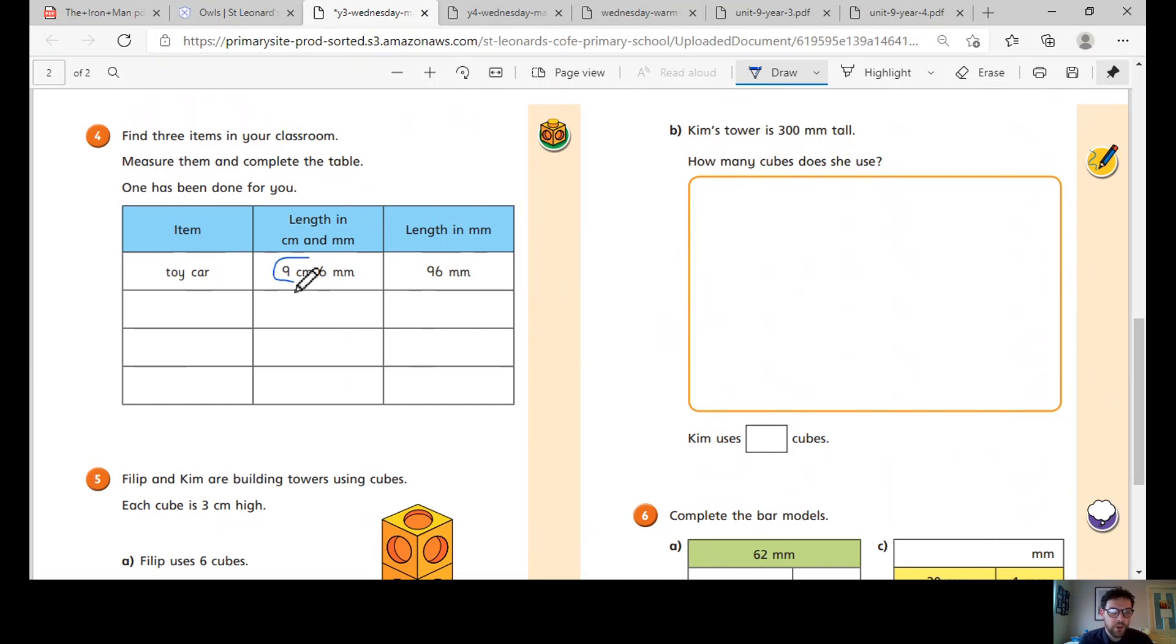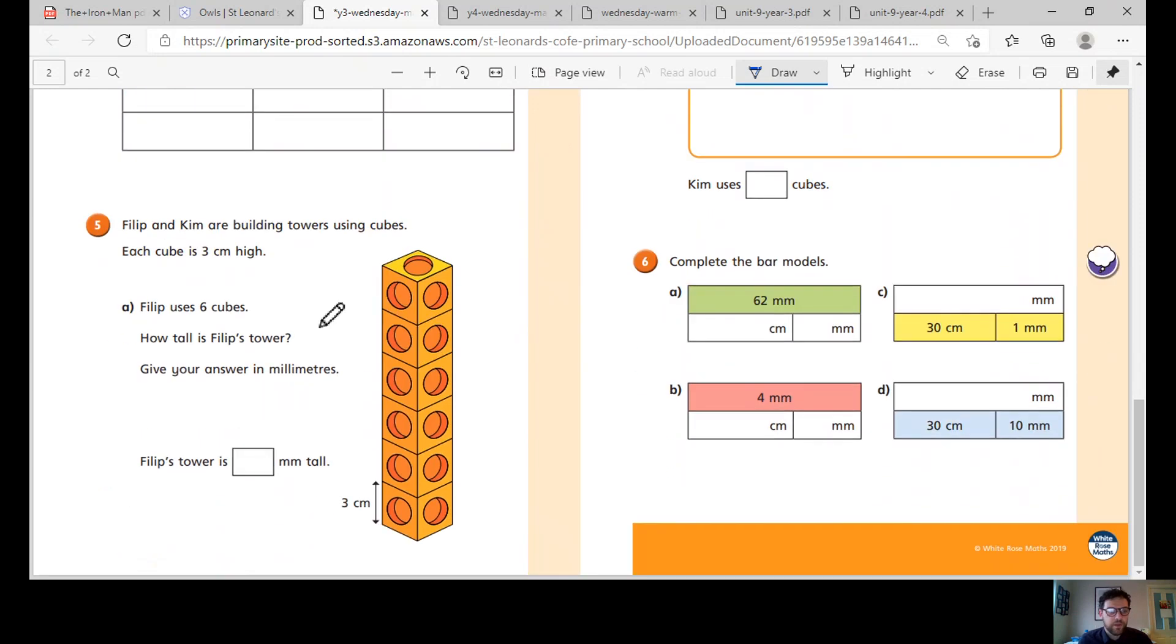Because the nine centimetres is 90 millimetres, so I'll just add that to my six, so it's 96.